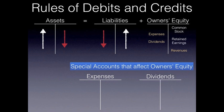Over under owner's equity I have the accounts that affect owner's equity. Remember, the accounts listed there in yellow don't actually appear on the balance sheet with owner's equity — they affect owner's equity through net income. Revenues and expenses affect it through net income, and dividends affect retained earnings. Owner's equity will increase with credits and will decrease with debits.